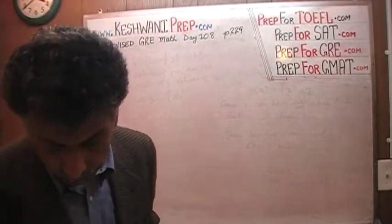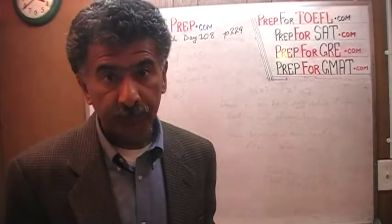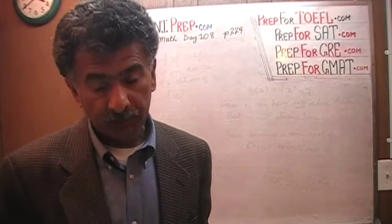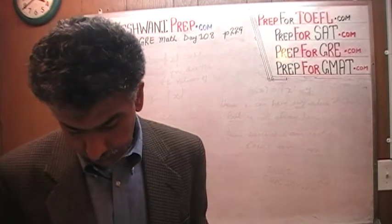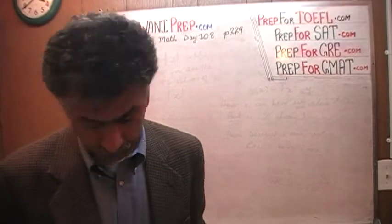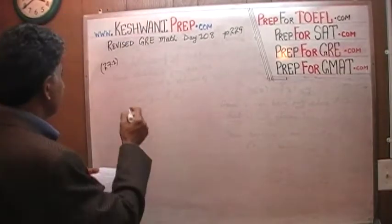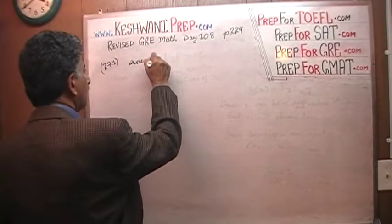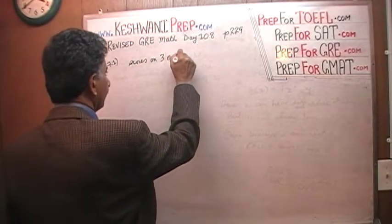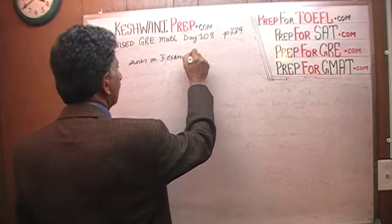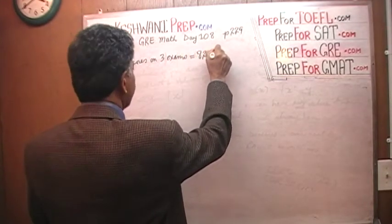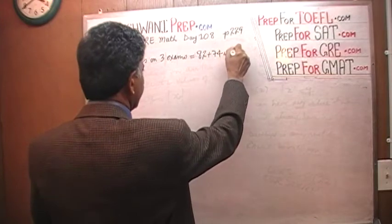Now here is what is going on. If you read the problem, you have to have the book in front of you. Turn to page 229 at the very bottom of it and read the problem to yourself. It says, Elaine received the following scores on 3 exams. So the person took 3 exams and their scores on 3 exams were 82 plus 74 plus 90.